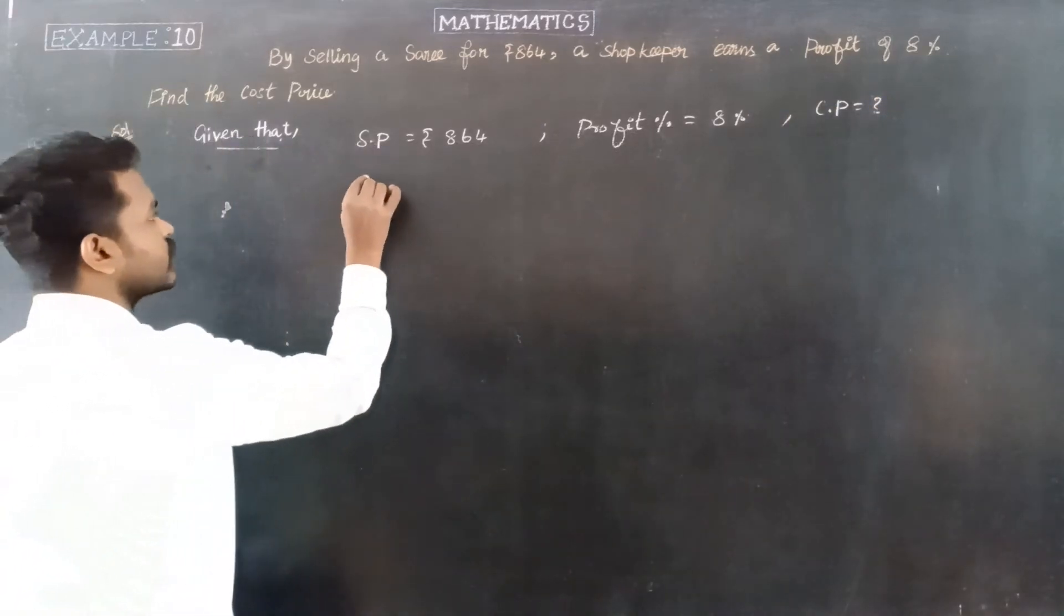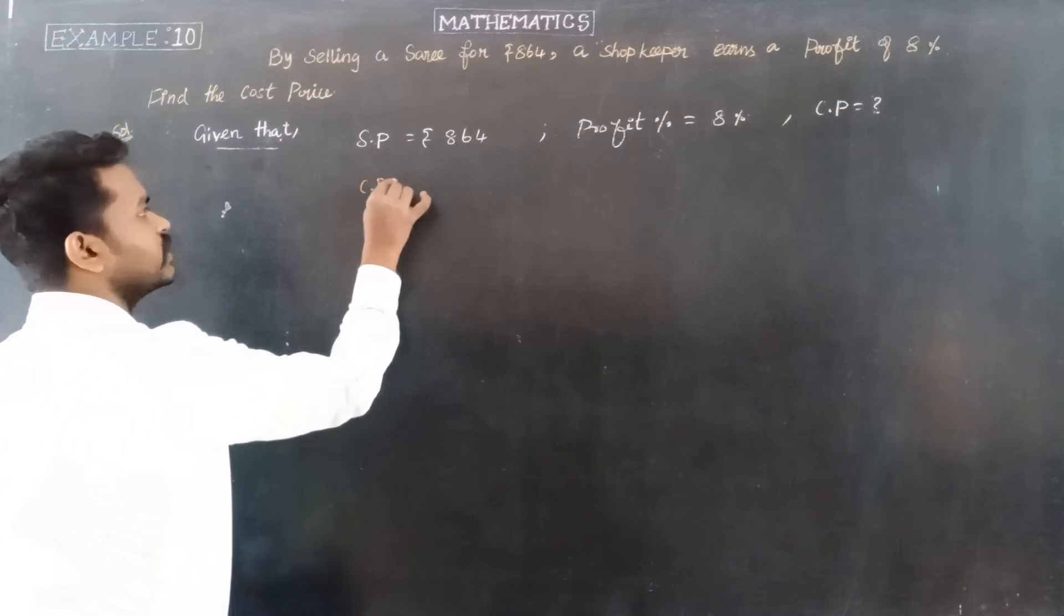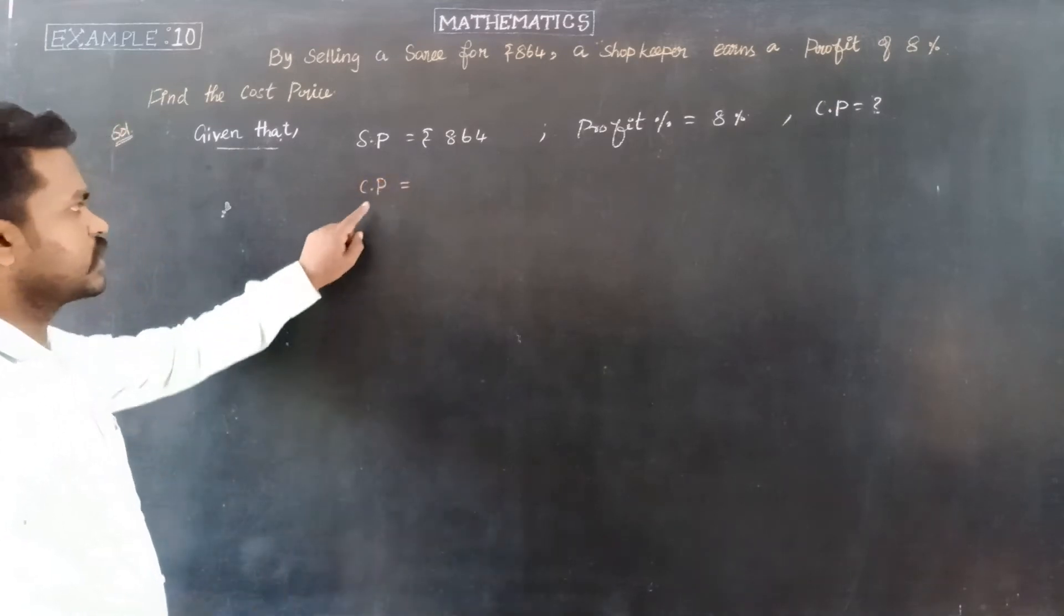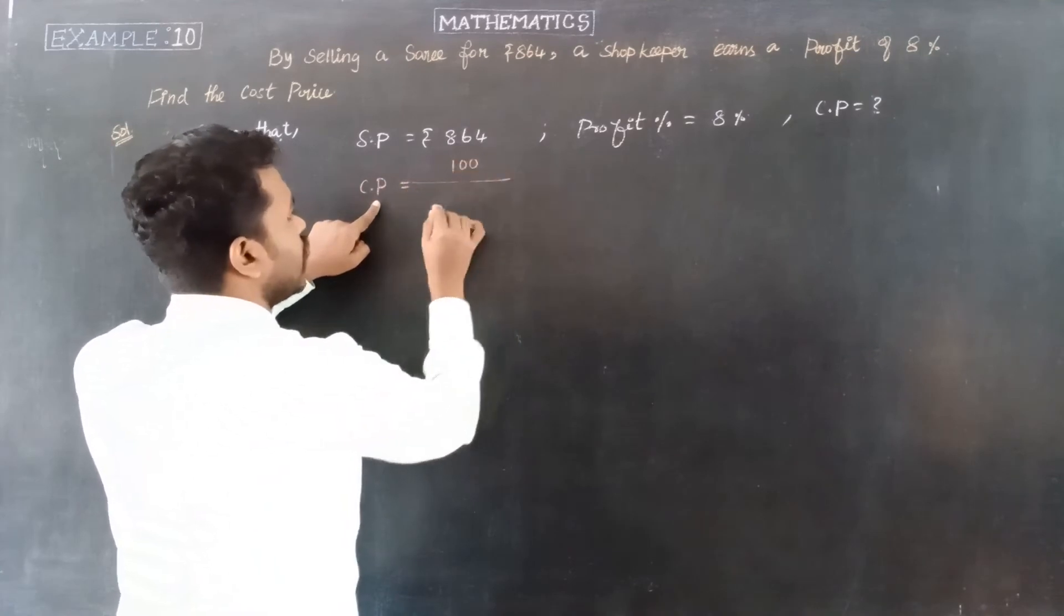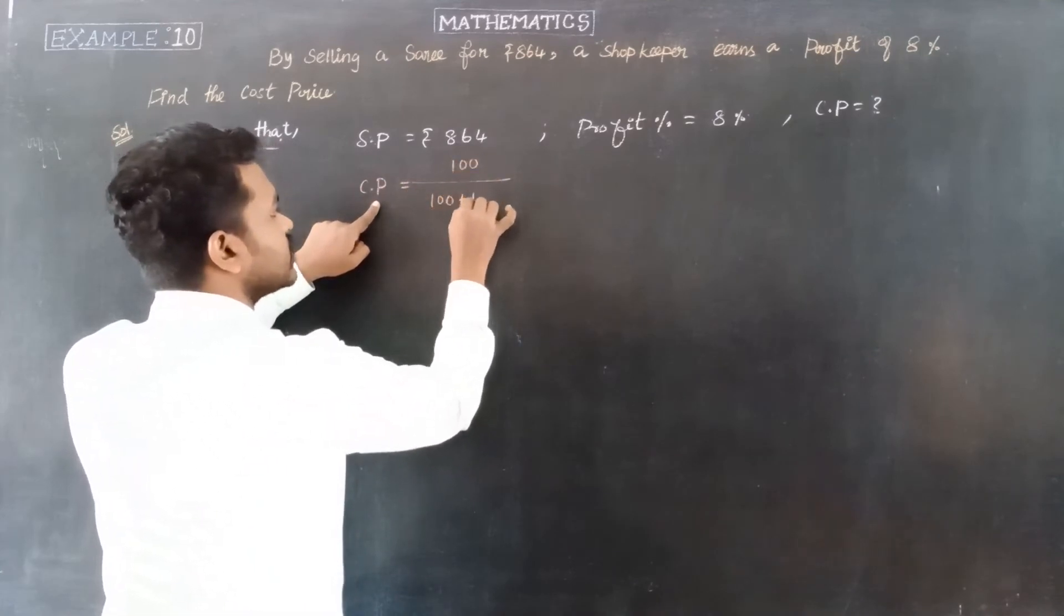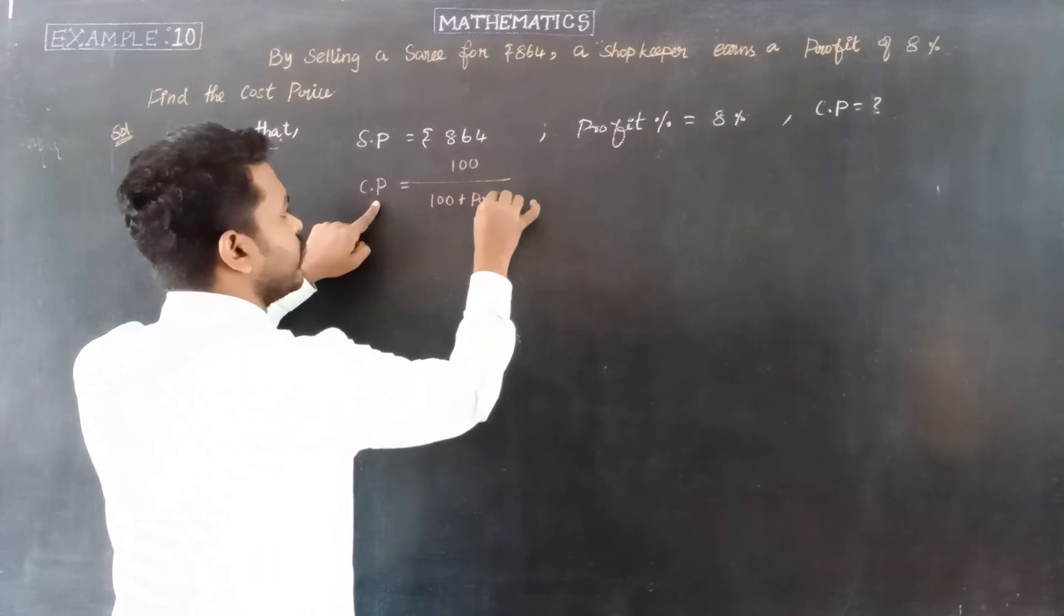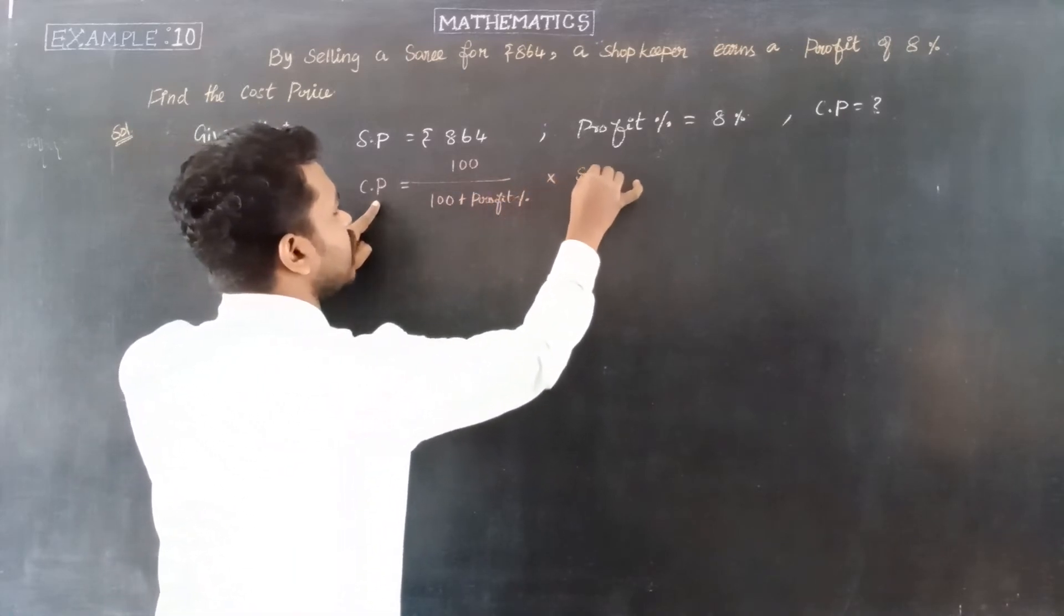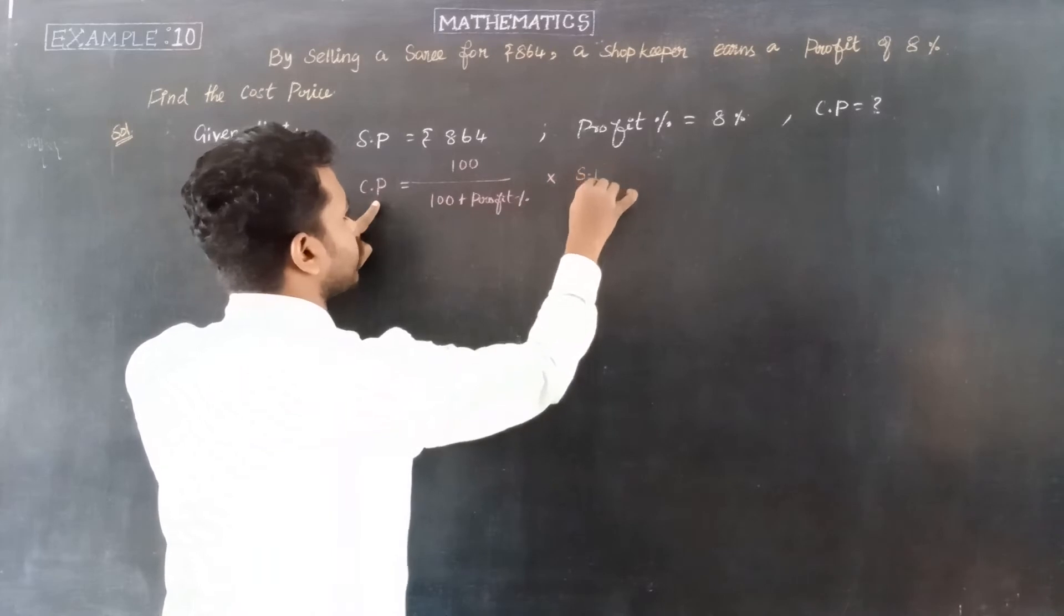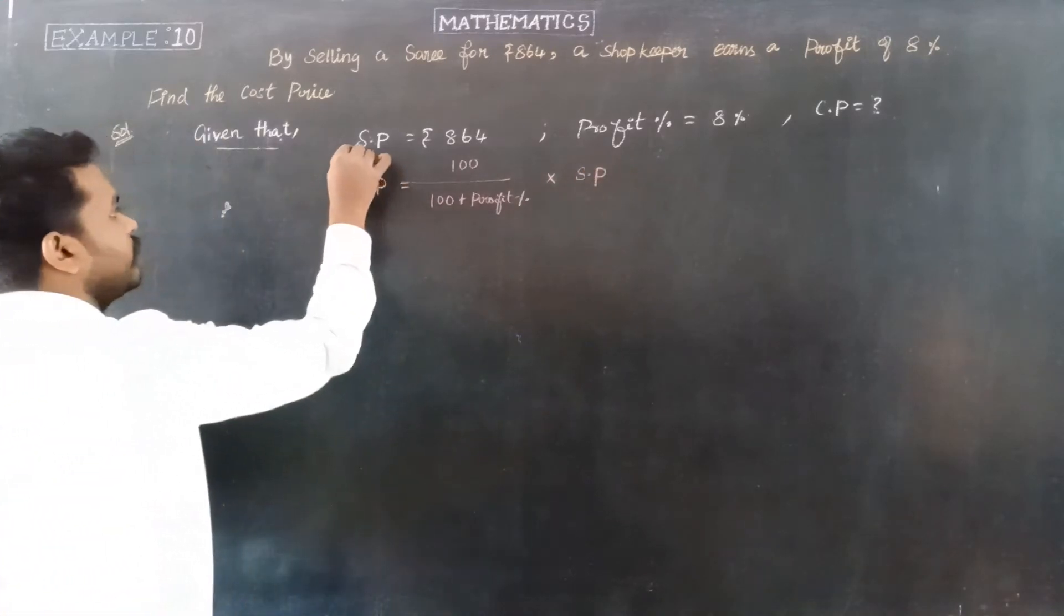We have a formula for finding cost price. Cost price is equal to 100 divided by 100 plus profit percentage, into selling price. This is the formula to find cost price when selling price and profit percentage are given.